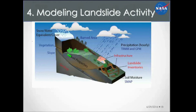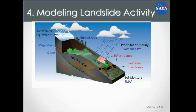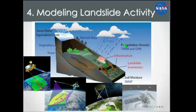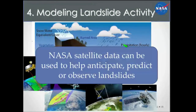Briefly on modeling activities: this schematic shows what types of satellite data we can use to inform the landslide process — from soil properties and soil moisture using the Soil Moisture Active Passive mission, to satellites that look at active or past burned areas, snow cover and snowmelt, changes in vegetation or forest loss, infrastructure from satellite imagery, precipitation, and slope information. This gives an example of the different satellite missions we can use to uncover different elements of landslide activity.